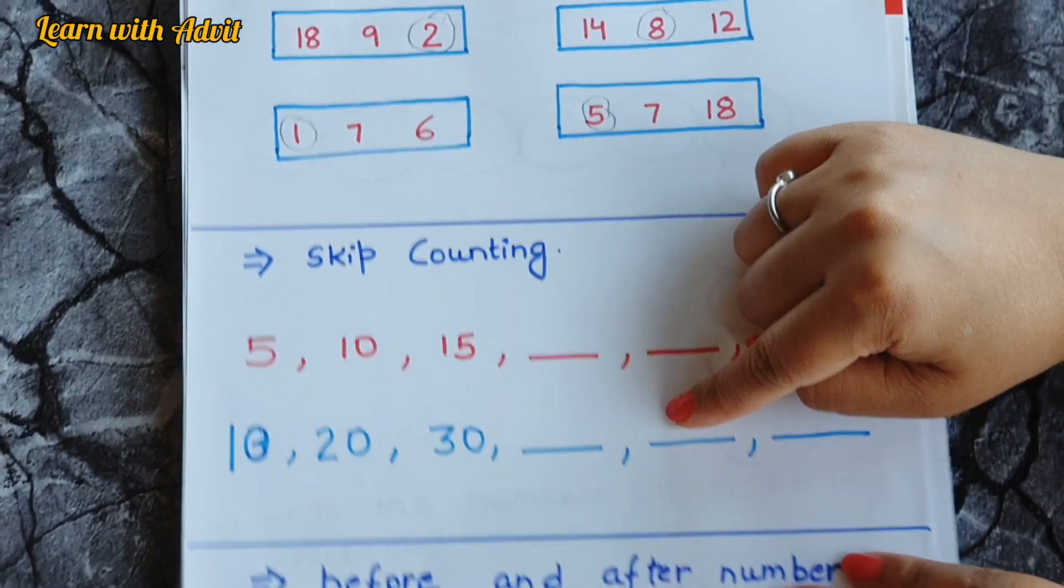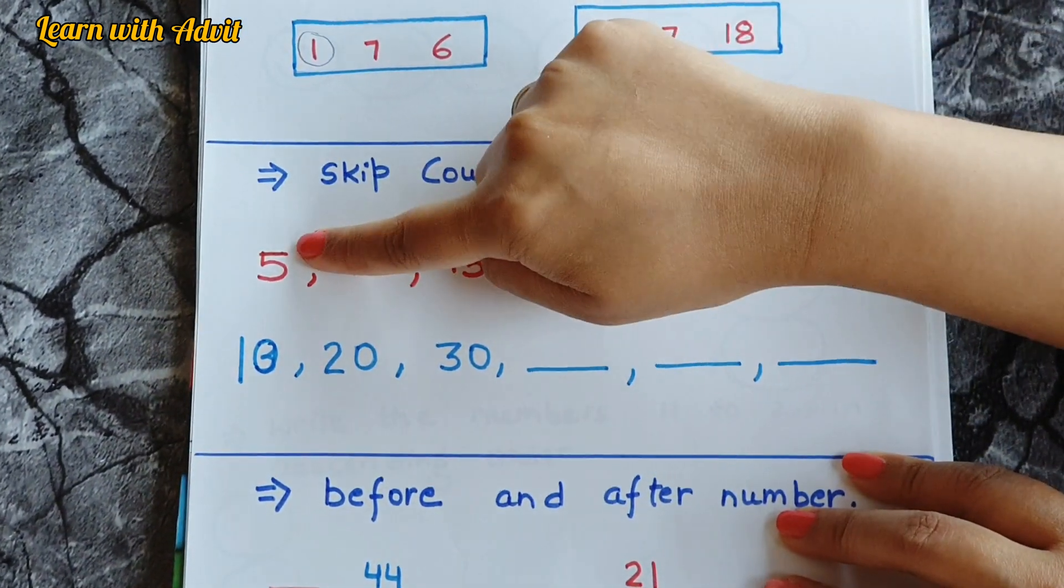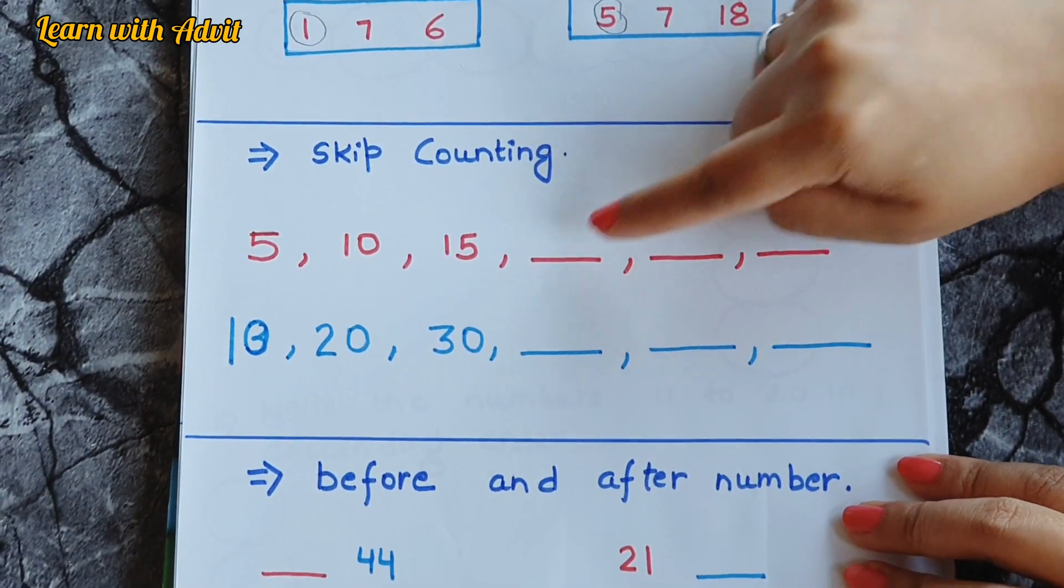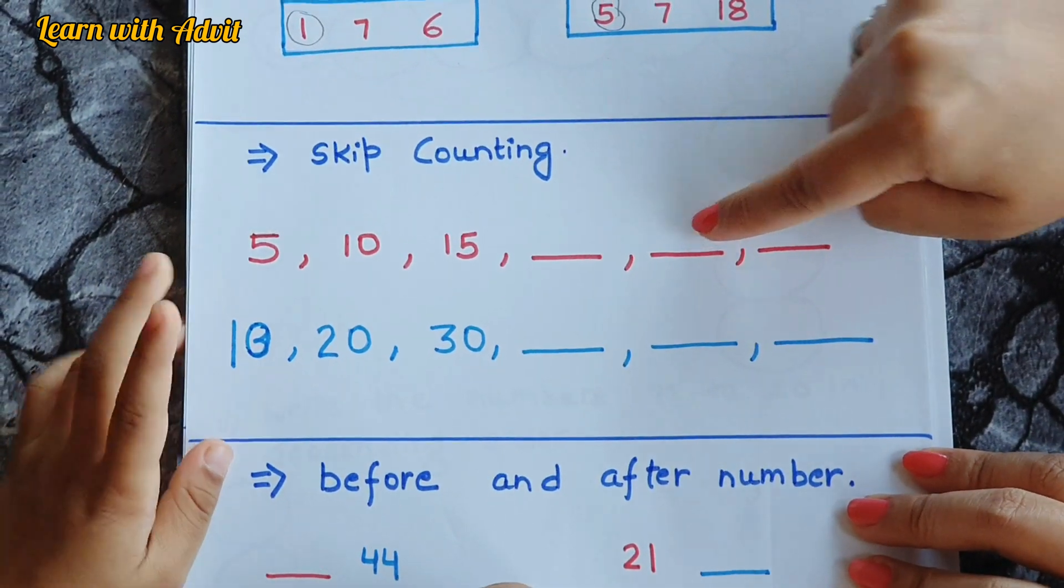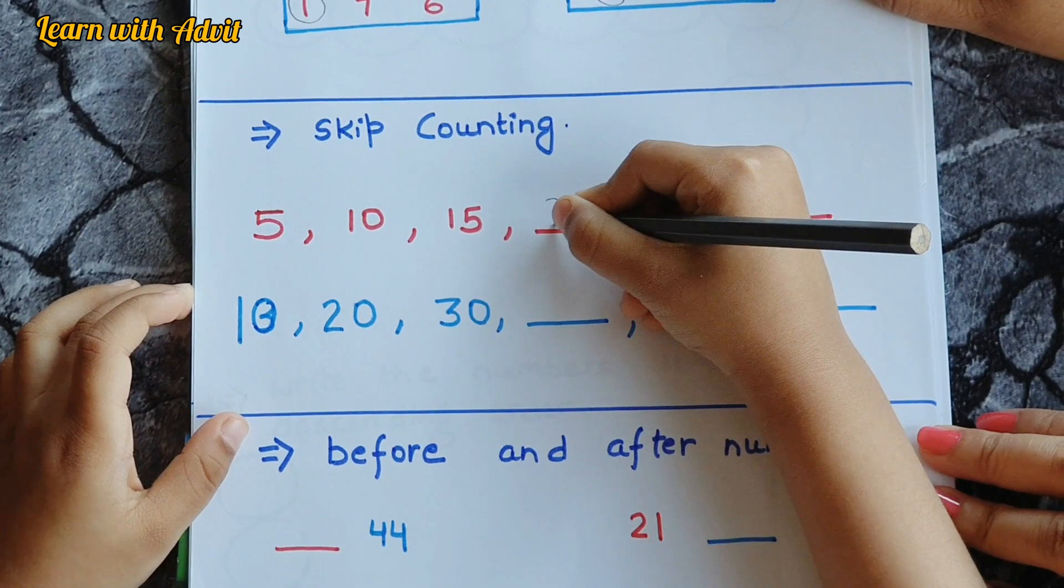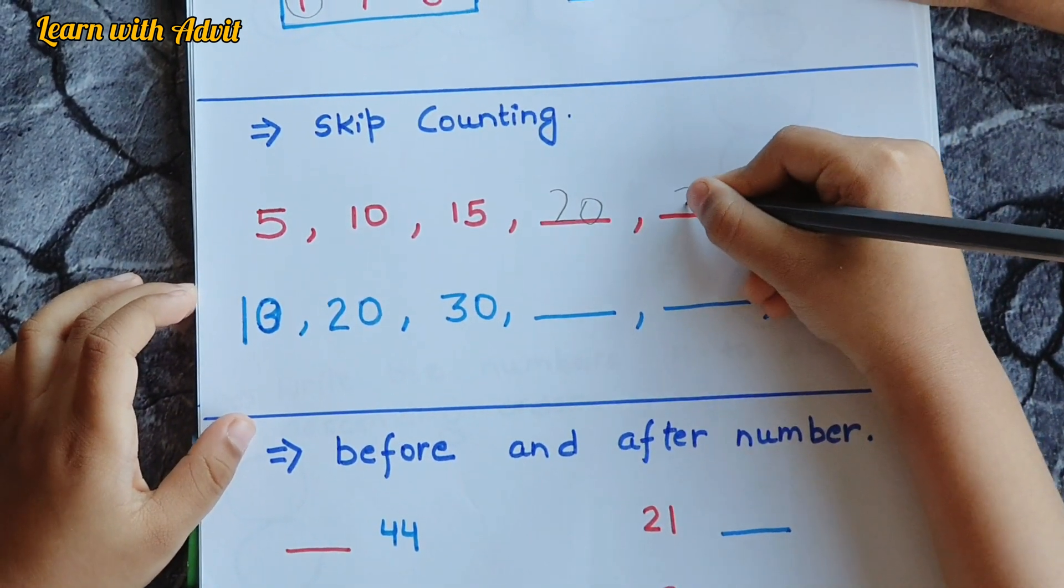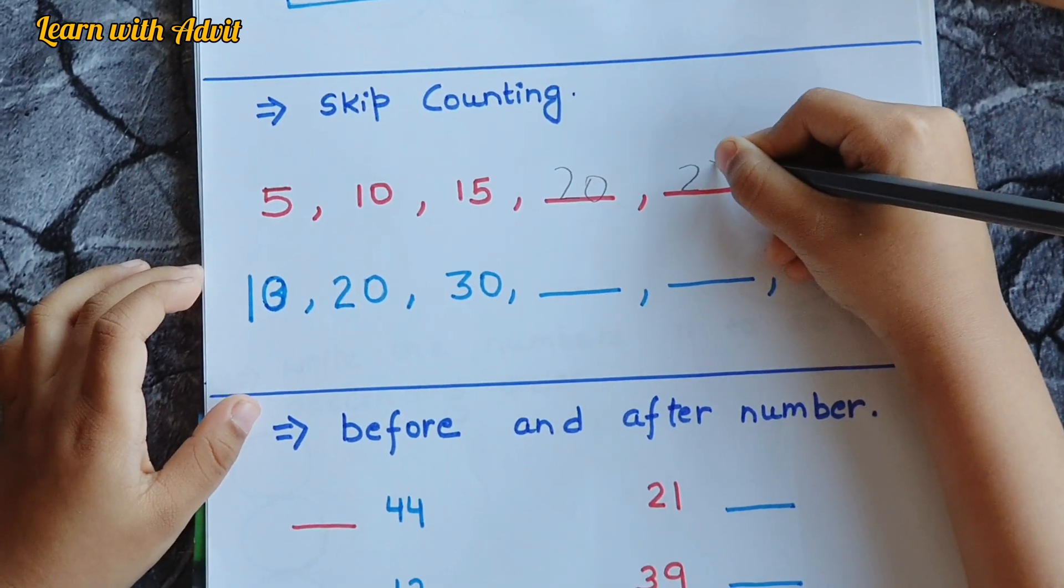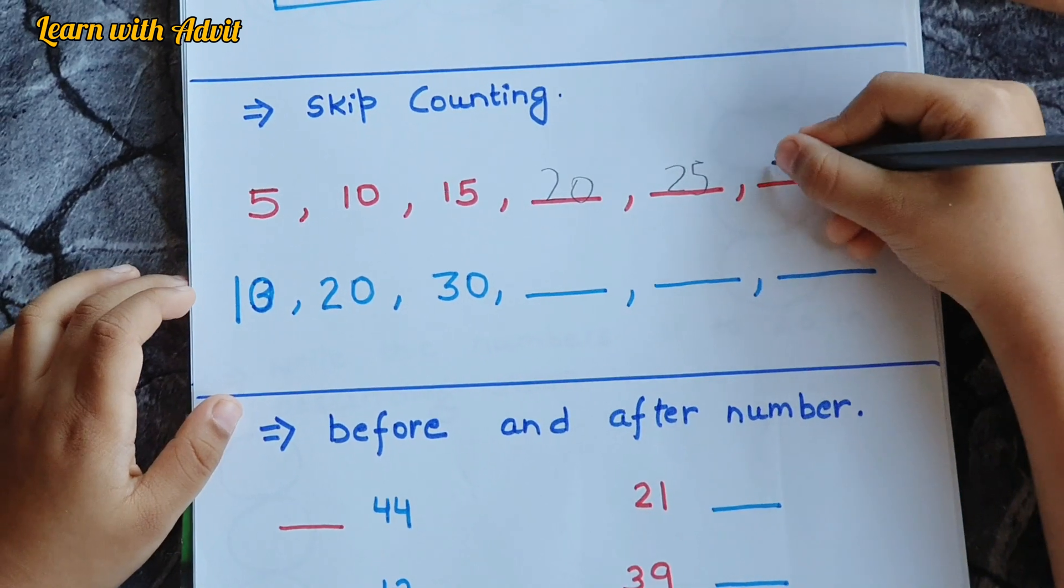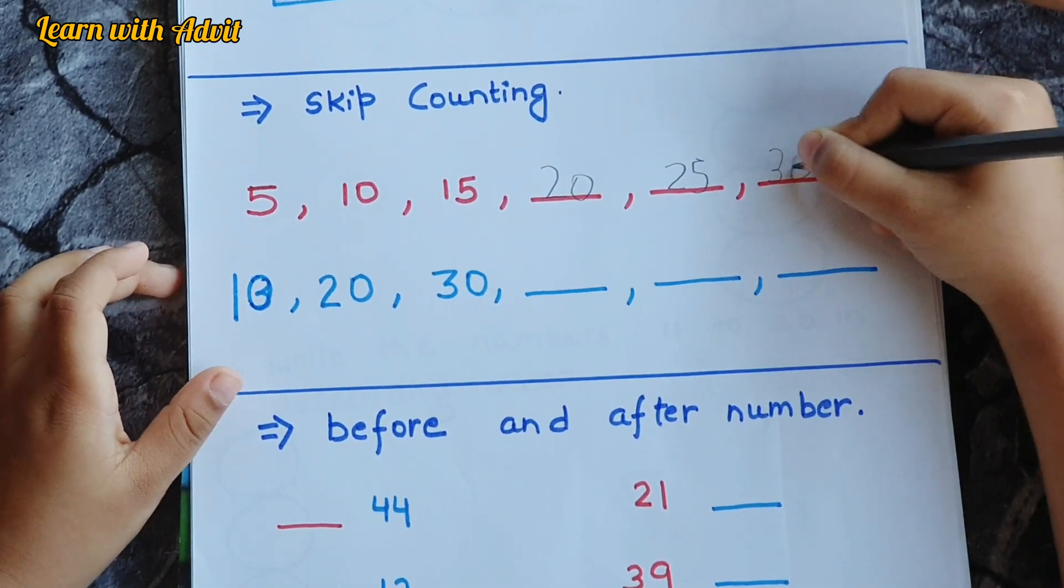So this is for skip counting. This is skip counting of five. Five, ten, fifteen. What comes next? Twenty. Then next? Twenty-five. Then next? Thirty. Write it down. Very good.